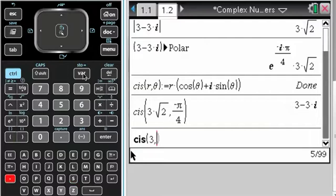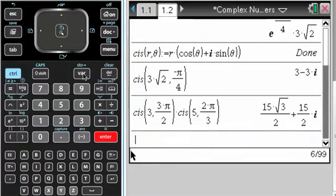3 comma 3 pi over 2, and maybe you need to multiply that by 5 comma 2 pi over 3. Sometimes it gives the answers in a surprising form.